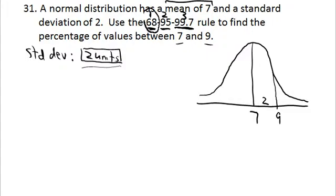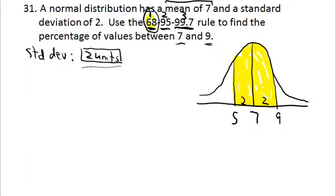That means 68 is going to be important. When you say within one standard deviation of the mean, you're talking about both directions. So even if the problem doesn't ask for it, you reflect the symmetry and go 2 units the other way as well, to 5. The rule tells us that within one standard deviation of the mean — the yellow area — 68% of the values lie.